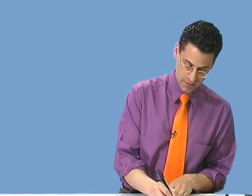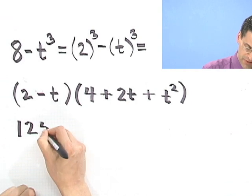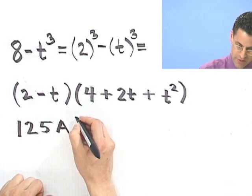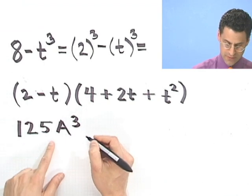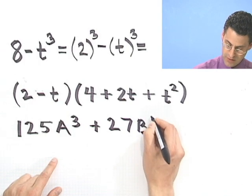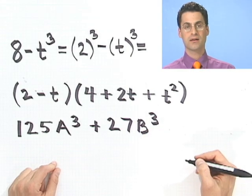One last one. See if you're really with it. Why should I be doing all the work? I think we should share the burden, don't you think? 125a cubed plus 27b cubed. Why don't you do this one? I'll just see if I can do it right after you do it. So try it right now. See what you can do.